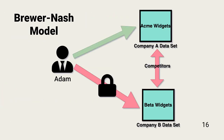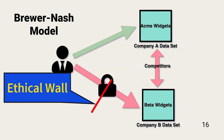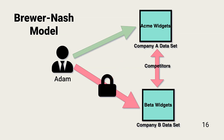In this example, Adam is a consultant and has access to the Acme Widgets Company dataset as part of a consultancy engagement. Beta Widgets, an Acme Widgets competitor, wants to engage Adam's employer in a separate consultancy project. Enforcement of the Brewer-Nash ethical wall prevents Adam's employer from assigning Adam to the Beta Widgets project, as doing so might give Adam access to the datasets of two competitors. This would result in the conditions needed for conflict of interest, even if Adam is a very honest person. Good policies, procedures, and controls must prevent this from happening as part of overall risk assessments.